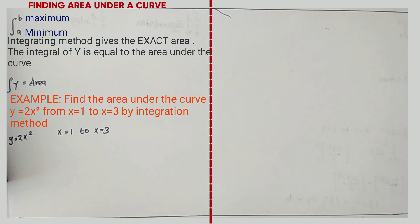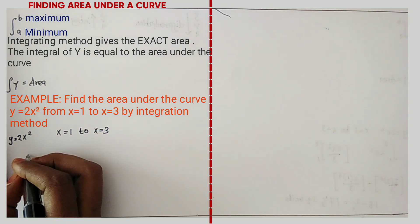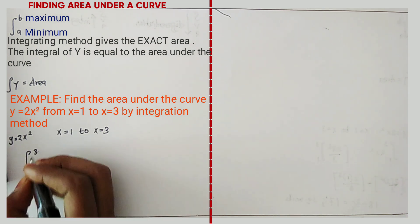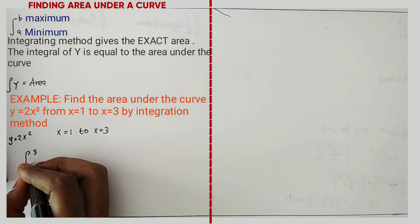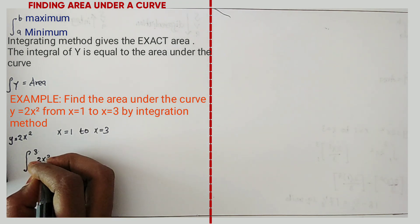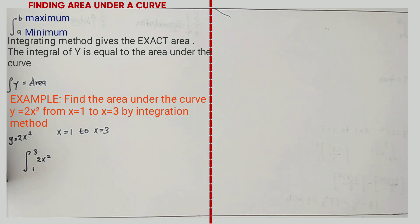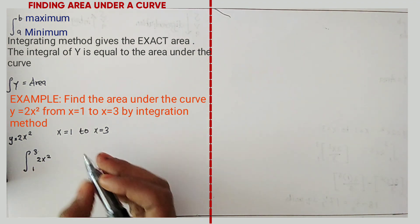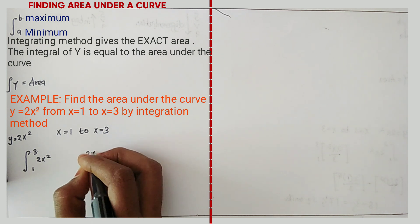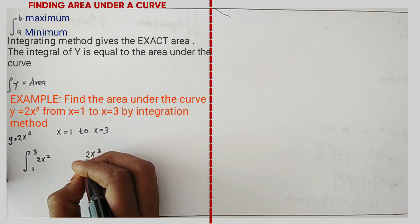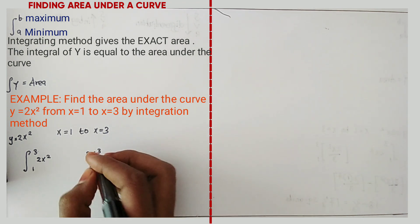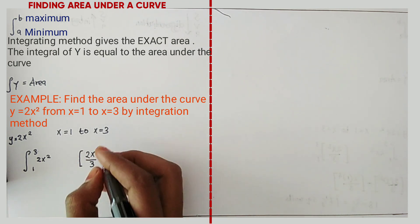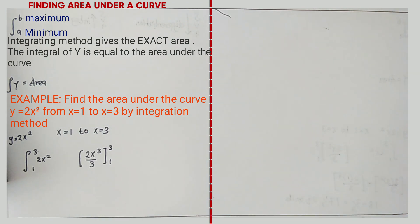We use integration. We have an integral with limits 3 and 1, and the equation 2X². When you are integrating, you add 1 to the power. So 2X² becomes 2X³, and we divide by the new power which is 3. We introduce brackets with our limits: 3 which is maximum and 1 which is minimum.